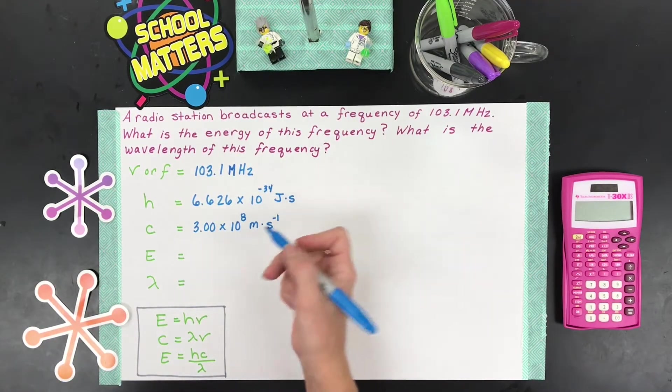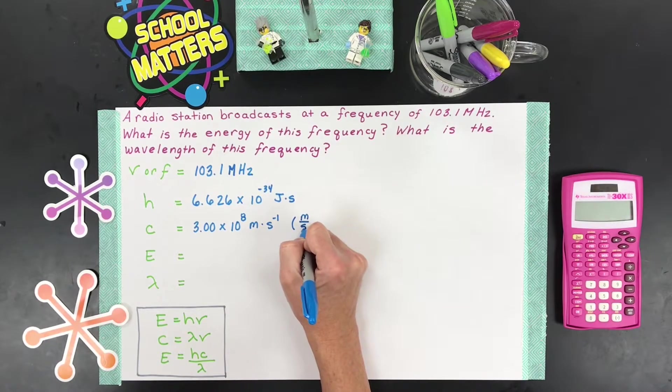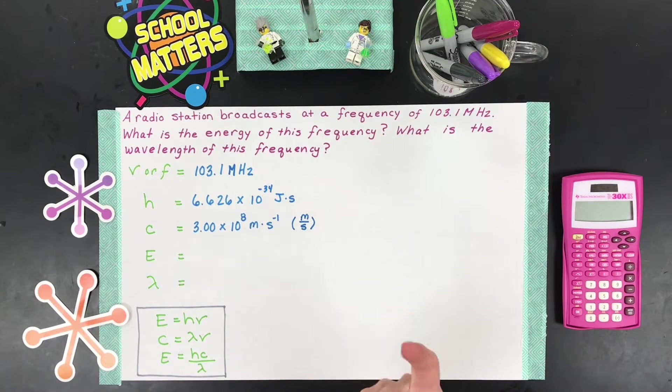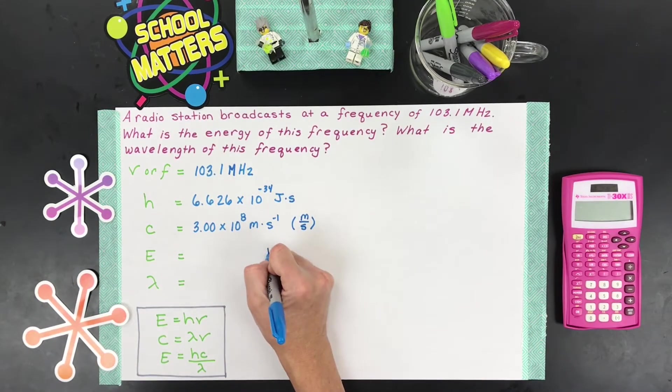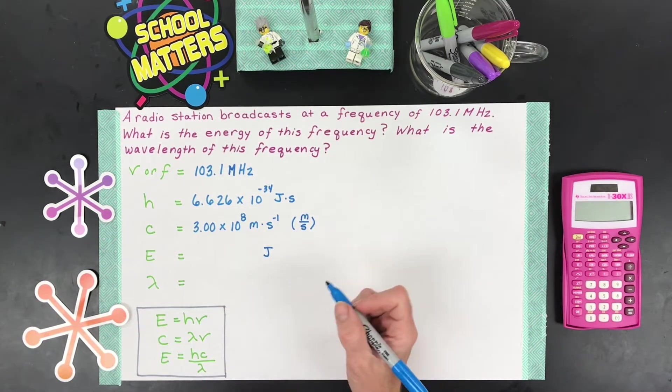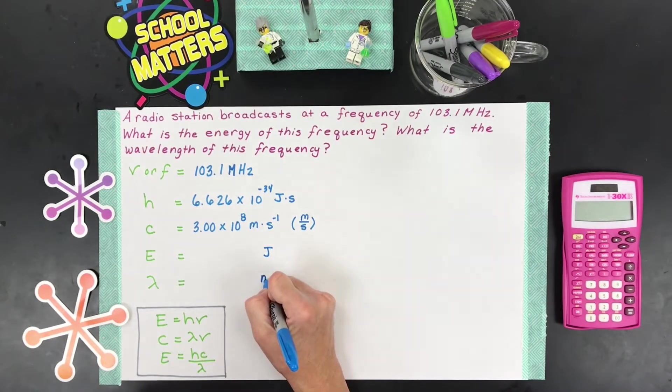The other thing is don't get confused. You might have a teacher who writes it like meters per second like that, instead of meters per second that way. Next, we're trying to find energy. The common unit of energy in physics and chemistry is joules, and then wavelength, it's also called lambda, has a unit of meters typically.